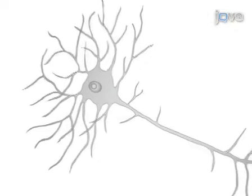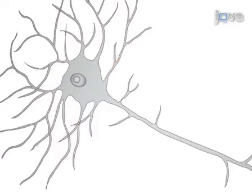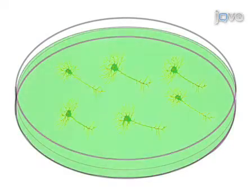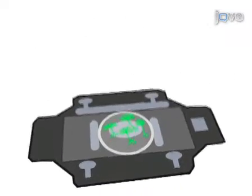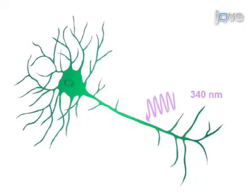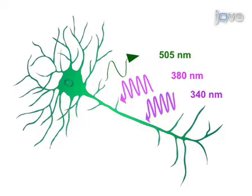Calcium imaging allows us to study the movement of calcium ions into and out of the cytoplasm in response to a variety of physiological stimuli. Cells are loaded with the calcium indicator dye FURA-2-AM and placed on a fluorescence microscope where they are illuminated at 340 and 380 nanometer wavelengths, which are absorbed by the dye. 505 nanometer emissions at these two wavelengths are collected, and intracellular calcium is calculated from the ratio of these values.